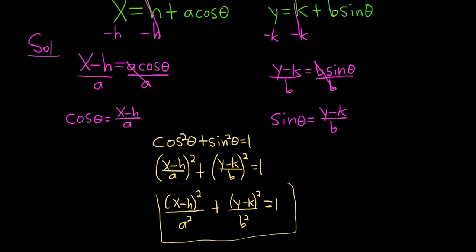And that would be the final answer. This is the equation of an ellipse with center h, k. So we've taken the parametric equations and converted them into our rectangular equation. That's all we had to do in this problem.